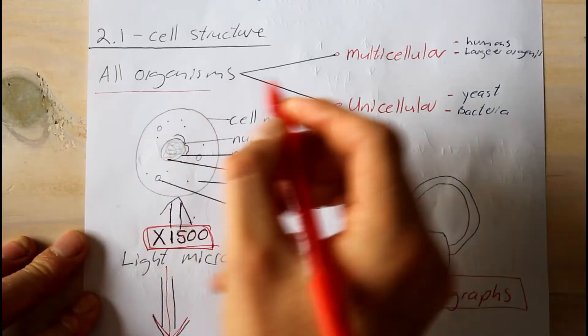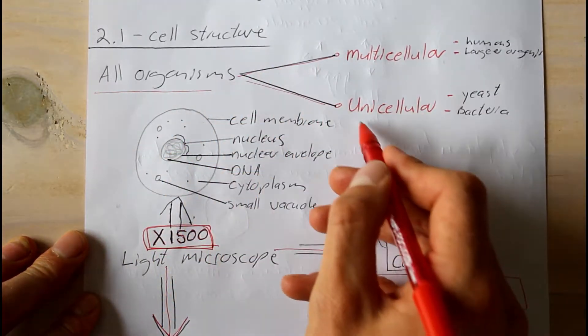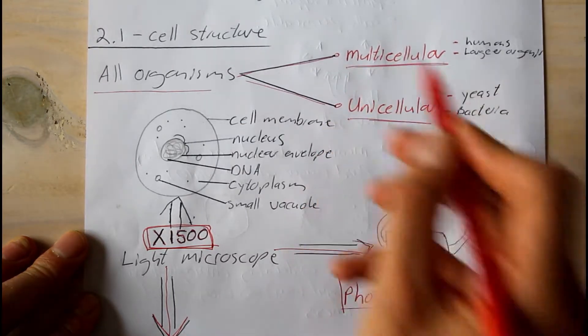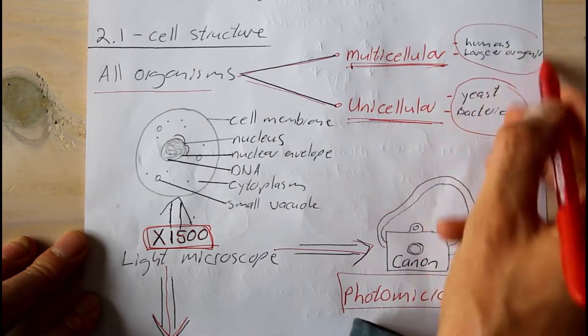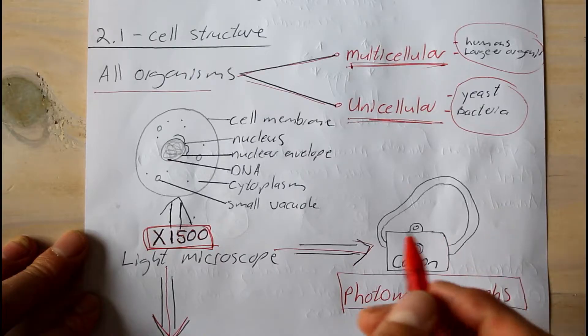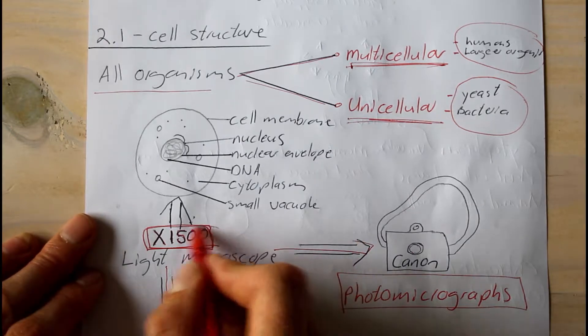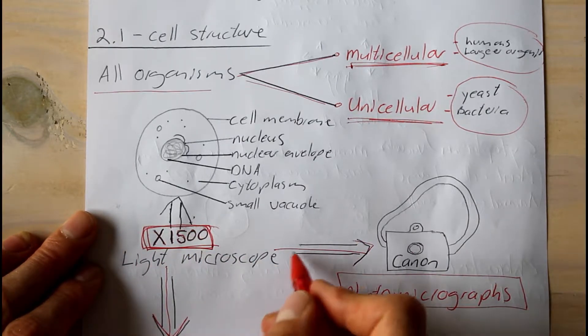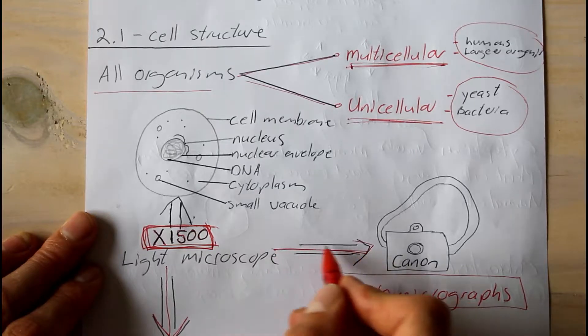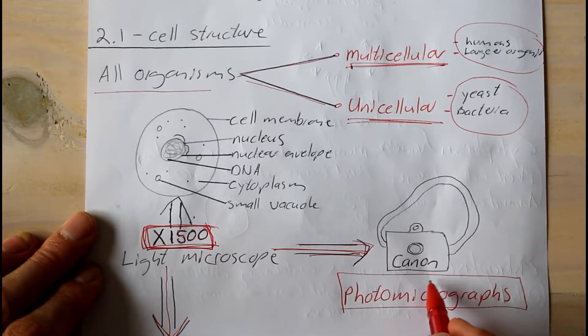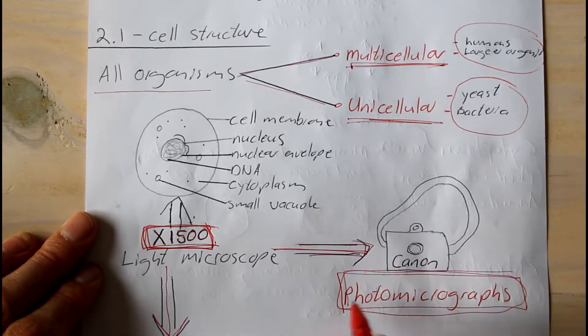The first section is the cell structure. You have to realize that all organisms are made up of cells. Now, some organisms are multicellular, and some organisms are unicellular. A cell can be seen with a light microscope. We've got our drawing of our cell. A good light microscope enlarges by 1500 times — this number you need to know, it's important. We can take a snapshot of this enlargement, and this is called a photomicrograph.